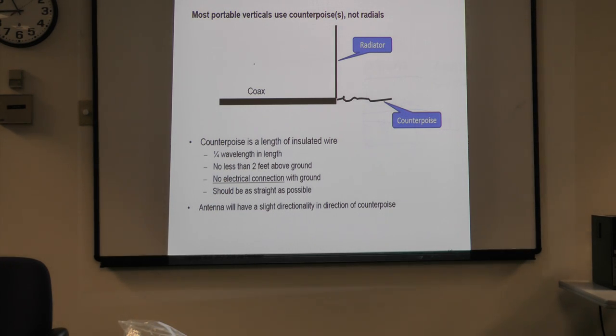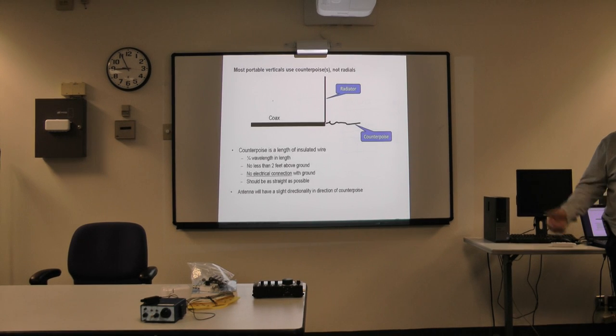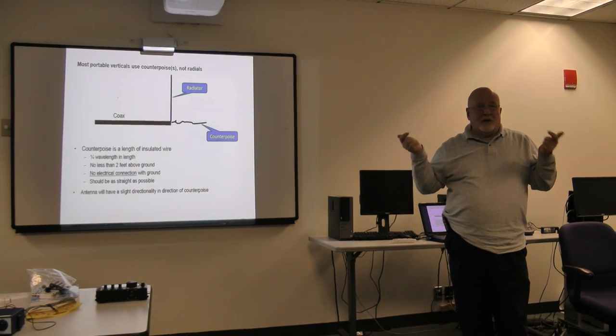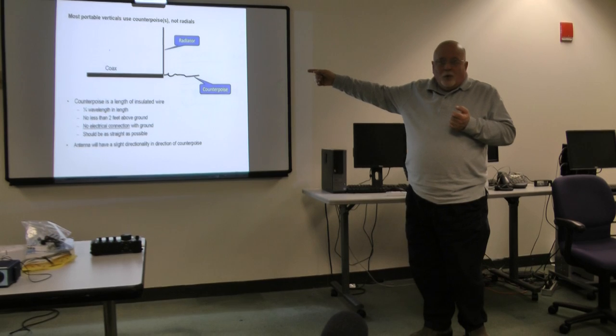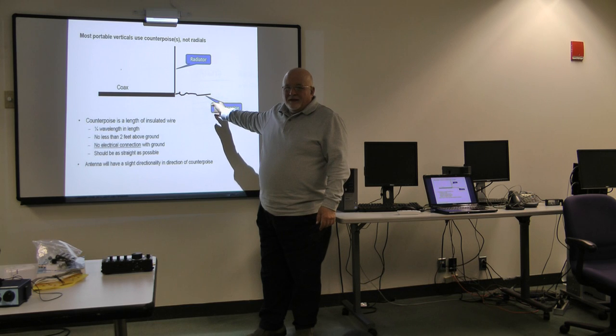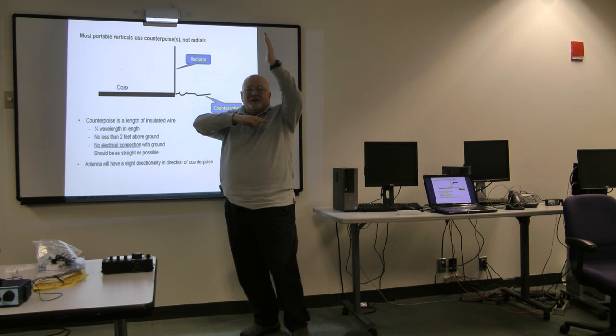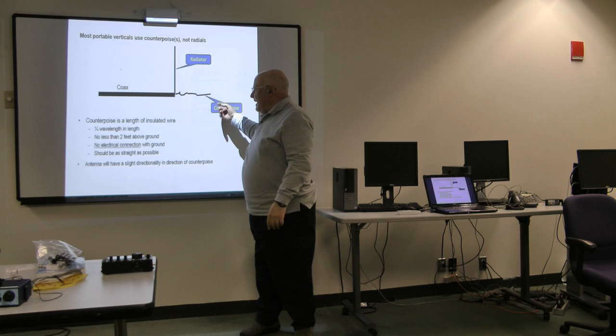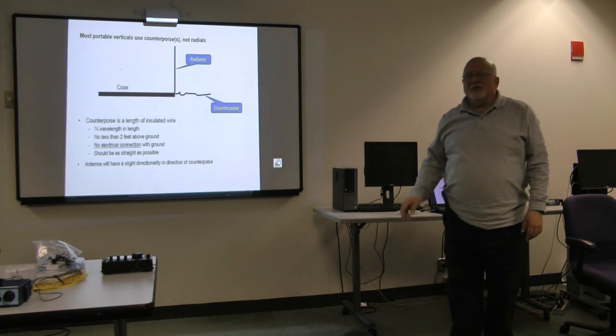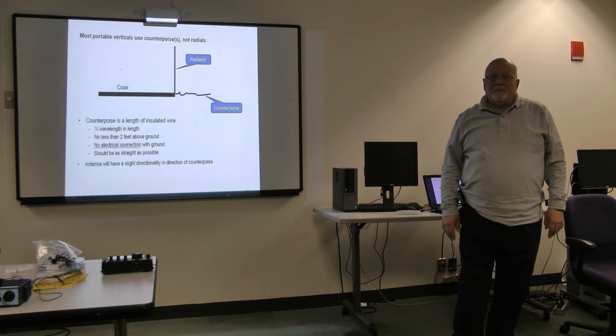There are a number of portable vertical antennas. Most of them use a counterpoise. A counterpoise is like a radial except it's not buried in the ground. It's above ground and it's electrically isolated from the ground. In essence, all this is is a dipole. The radiator is one half of the dipole. The counterpoise is the other half of the dipole. Except it's got the vertical element. You take a dipole and you move one of the arms of the dipole vertically instead of horizontally. Would that be directional? Yes. It'll have some slight directionality in the direction of the counterpoise.